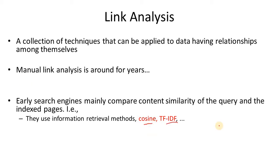Link analysis is also very fruitful for search engines. In the early days of the internet, search engines identified relevant pages for a given query based on cosine similarity or TF-IDF similarity. However, such a system can be fooled very easily. For example, a web page with no meaningful content but redundant keywords would receive a high similarity score and be suggested as relevant, so people started to abuse such algorithms.